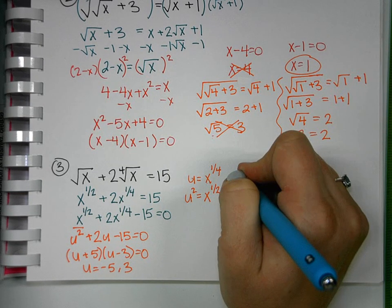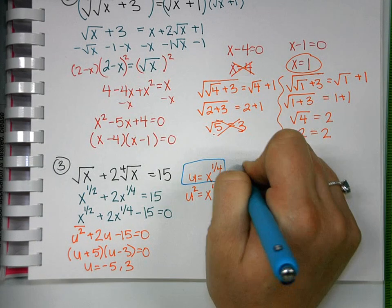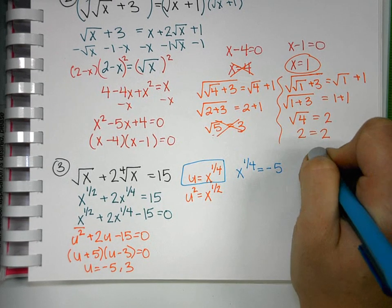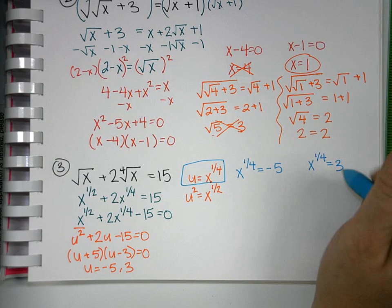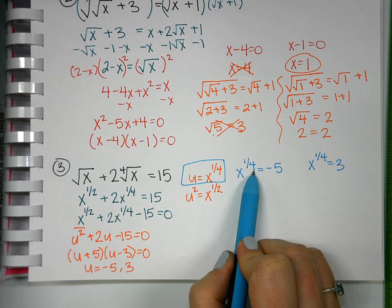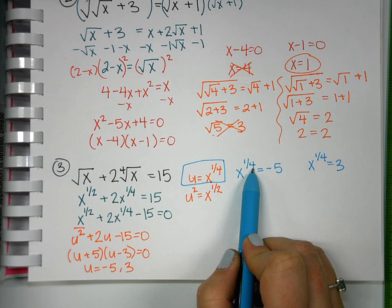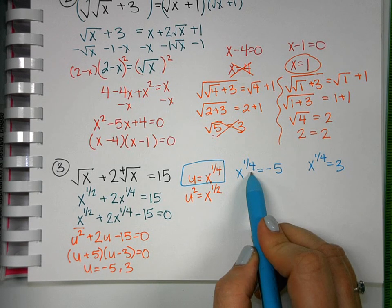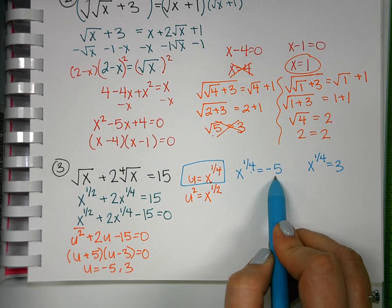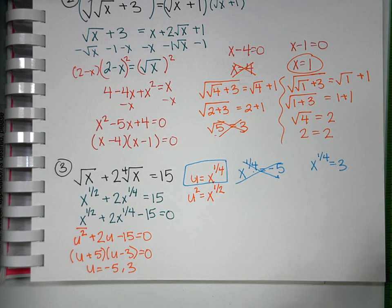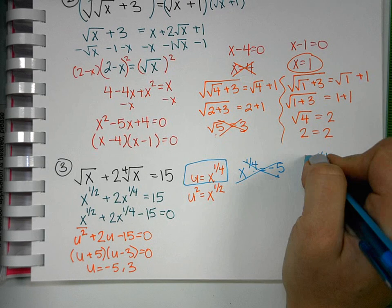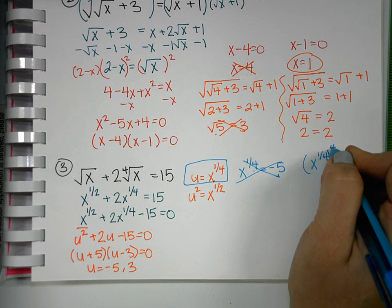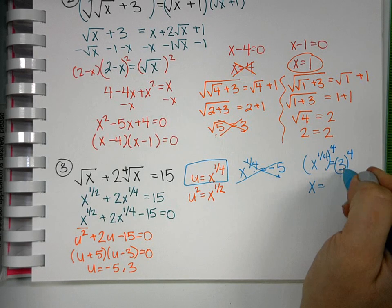We're only using what u equals here. So I have x to the 1 fourth equals negative 5, and I'll have x to the 1 fourth equals 3. I notice I have an even index or an even root that I'm trying to take. Even roots cannot equal a negative number. So because it's an even root, I cannot have it equal negative 5, which means this is not a possible answer. So I come over to my other one. If I raise both sides to the 4th power, these will multiply together to become just x. And then 3 to the 4th is 81.